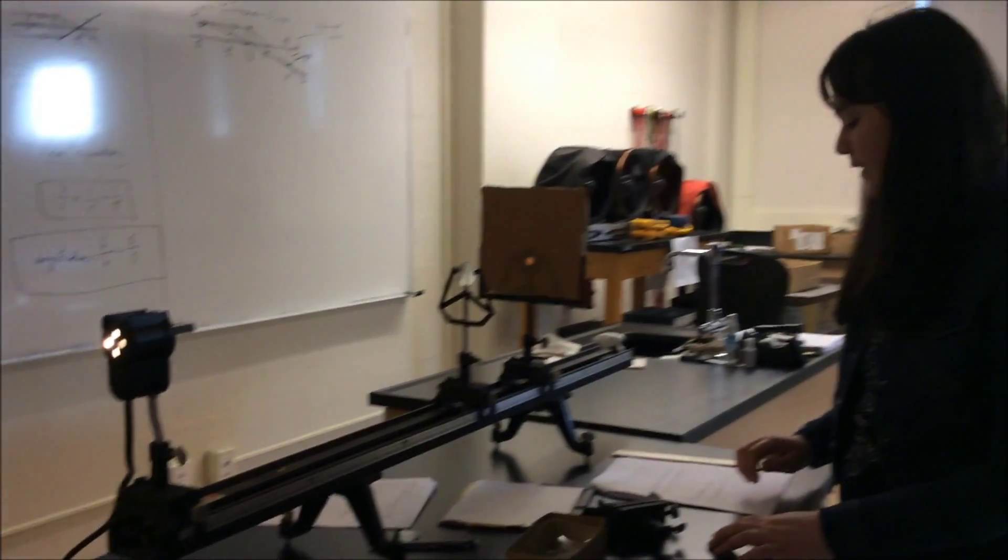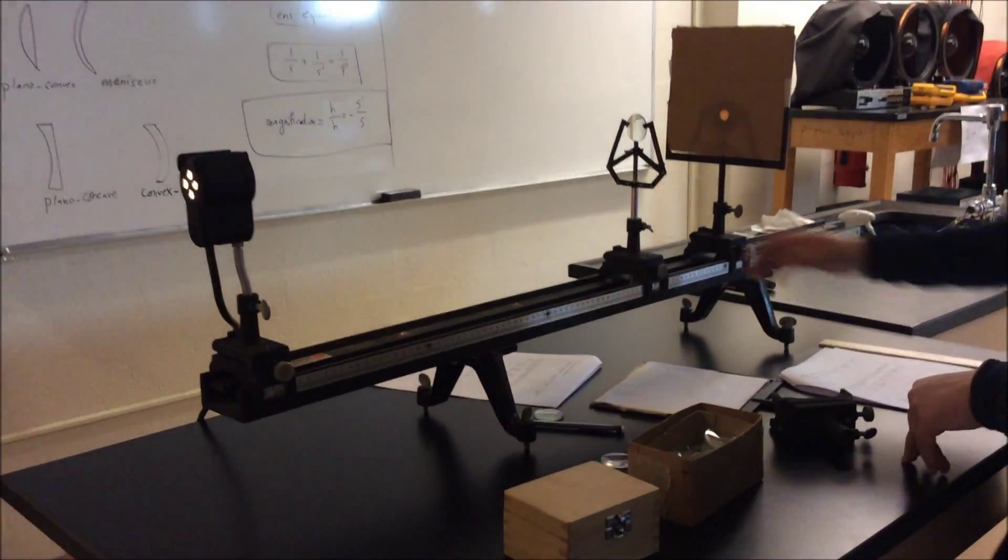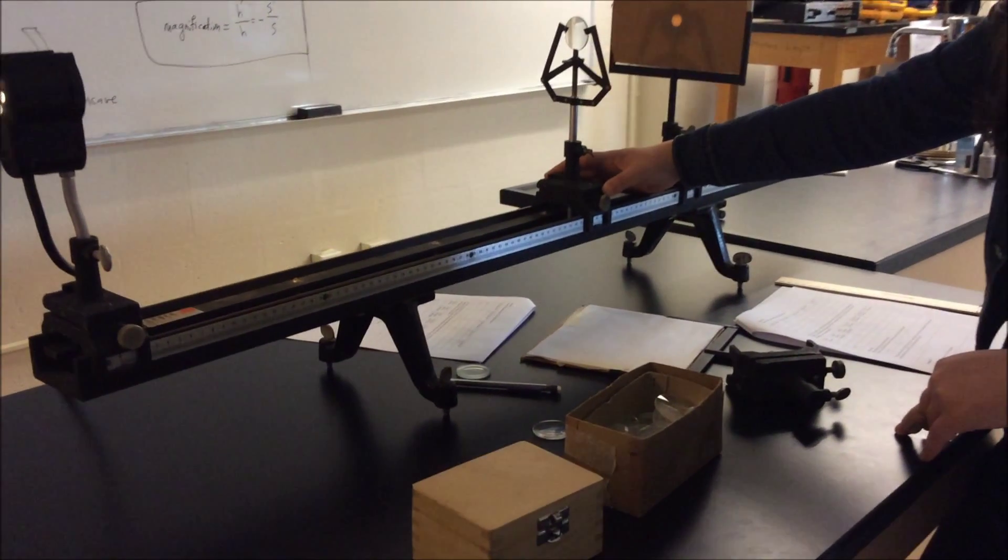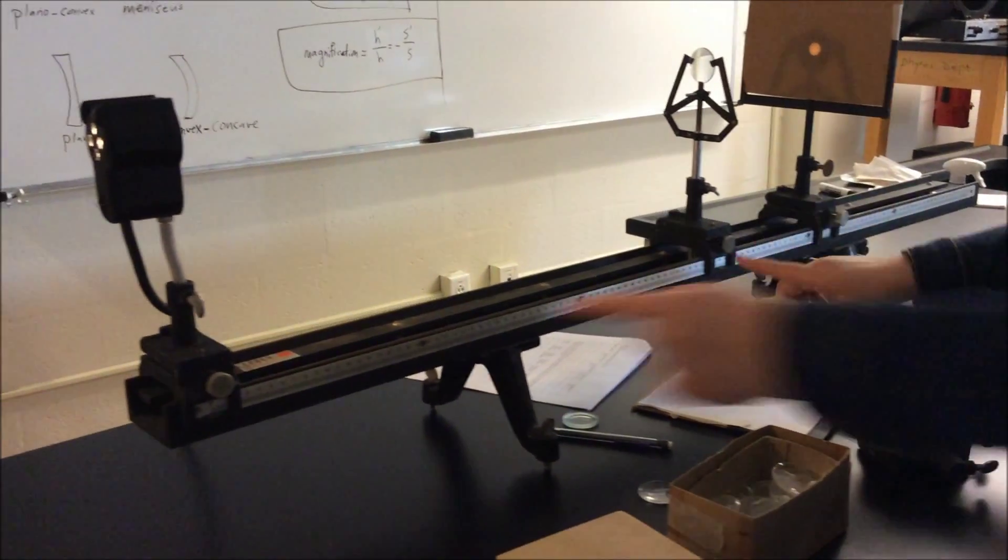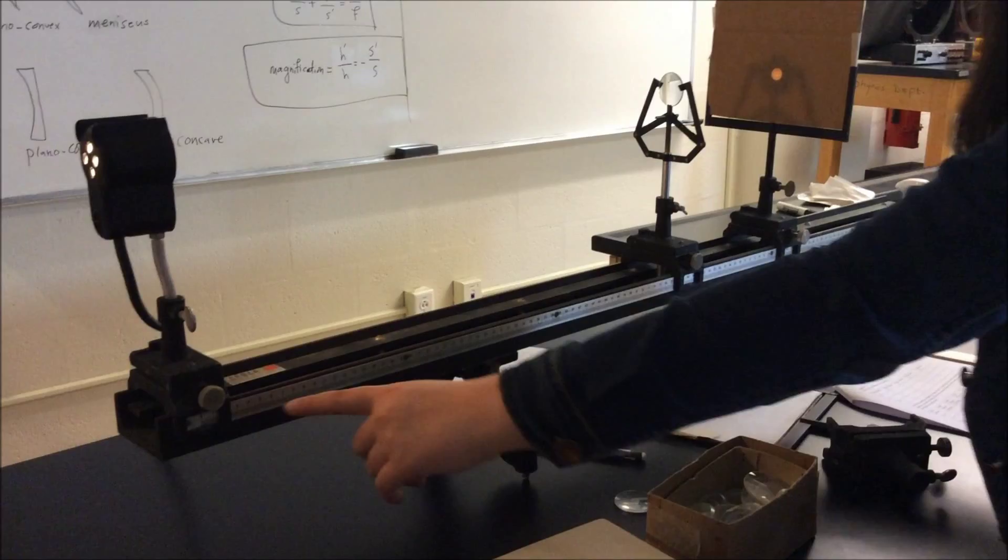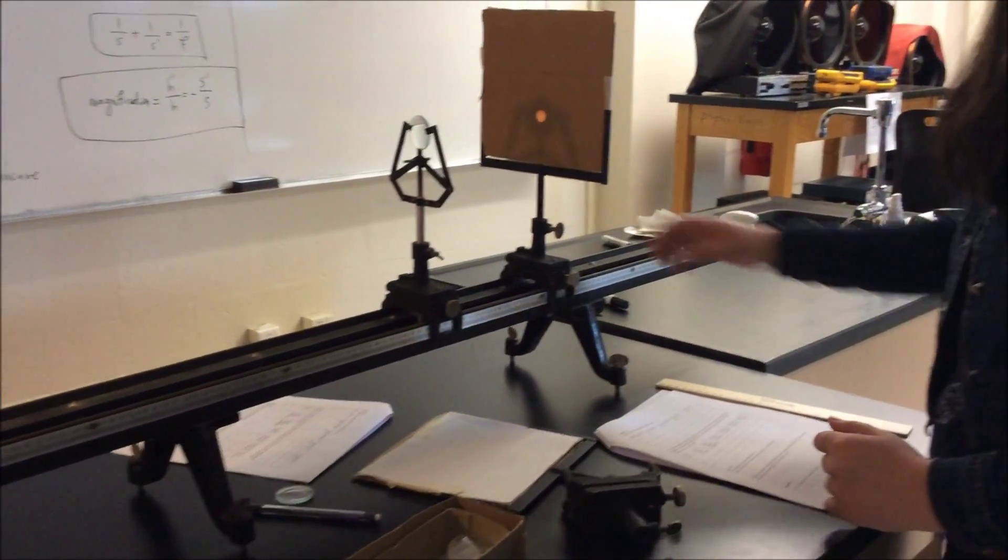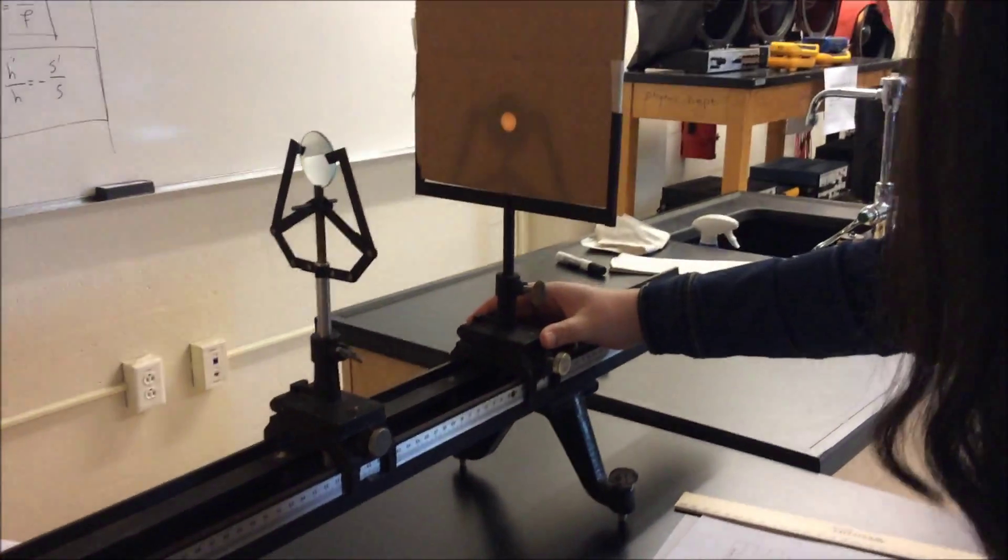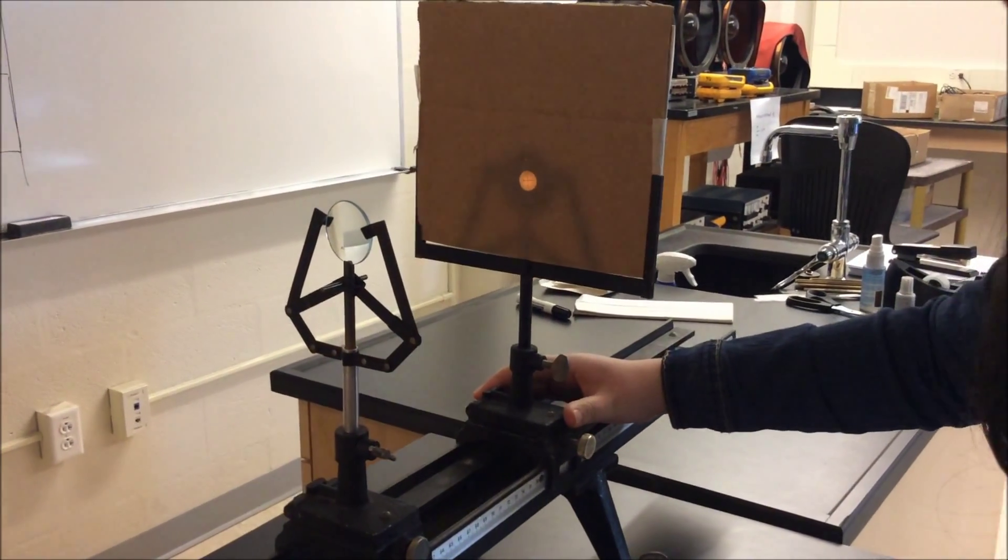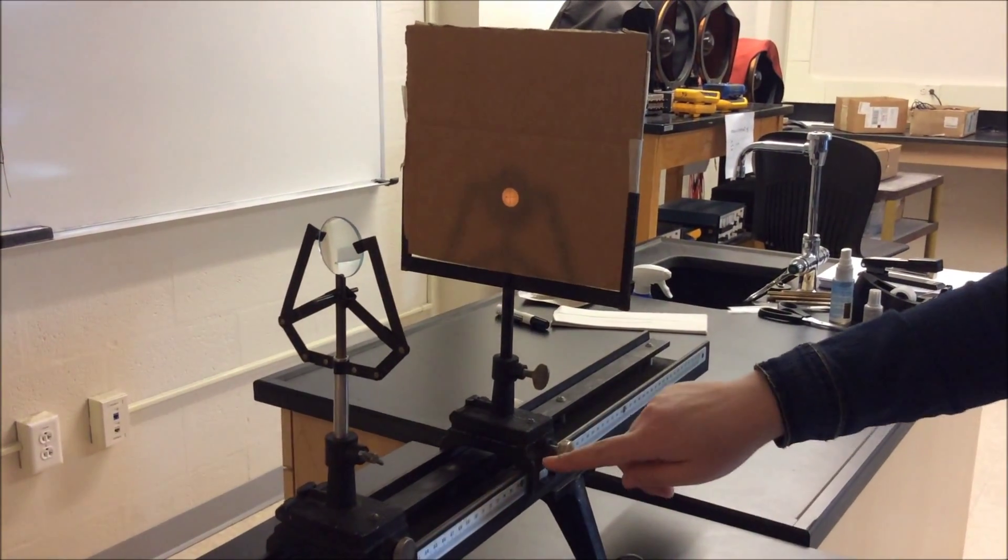For part two of this experiment, you're going to look at the first data table, and it says to move the object three focal lengths away from the light source, and this is going to be your object distance. Now to find the image distance, you're going to move the screen to see where the object is going to be sharp and clear, and this is going to be your image distance.